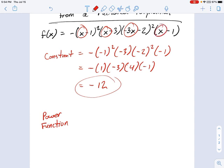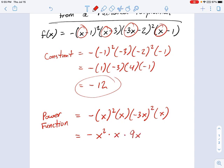So instead of multiplying all the right terms to get the constant, now we're going to multiply all the left terms to get the power function. We have negative times x² times x times (-3x)² times another x. And if you look back at the original form of this function, see those x's that I circled? You can see where these parts are coming from. So let's work through this. Notice we have -x² times x times, this one's 9x² times another x.